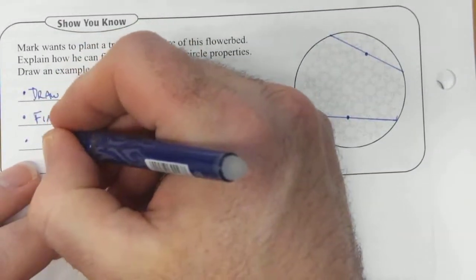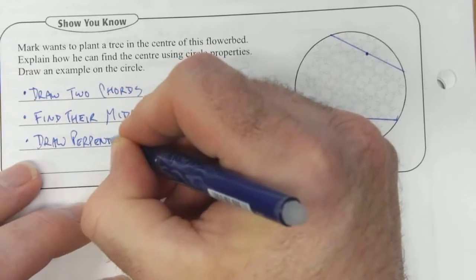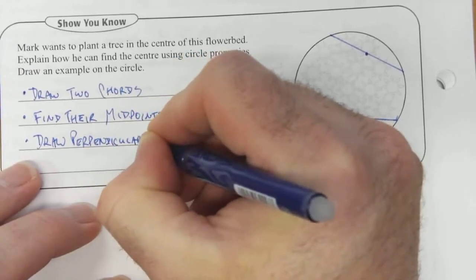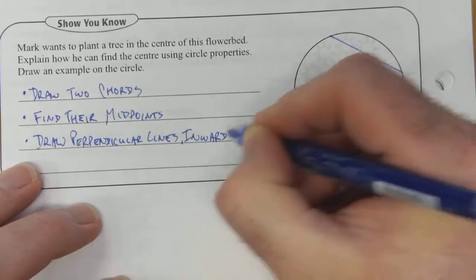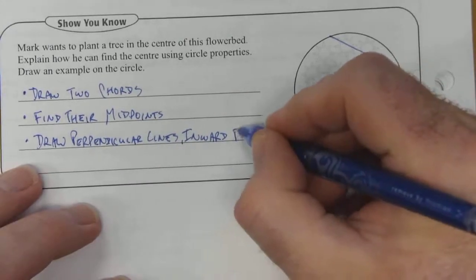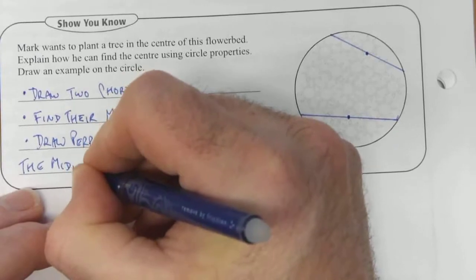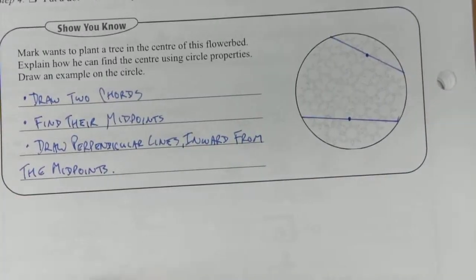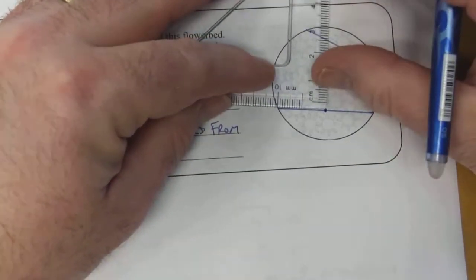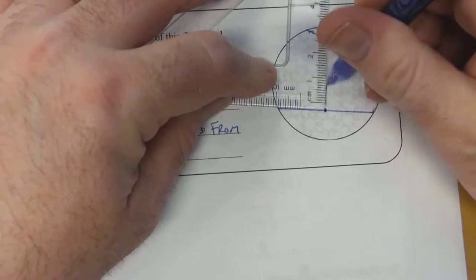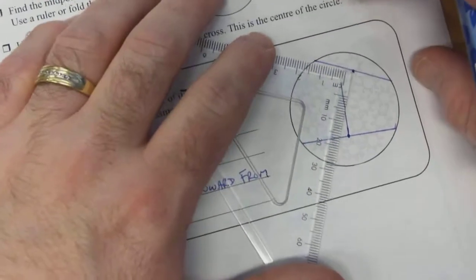Then, draw perpendicular lines inward from the midpoint. Line it up. There's one. Line that one up.